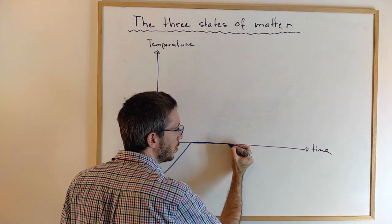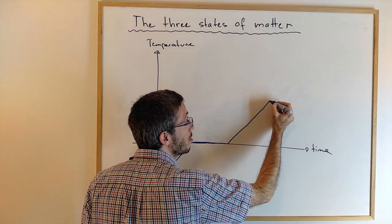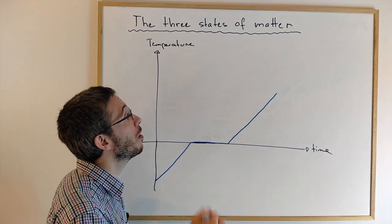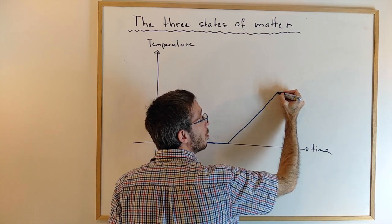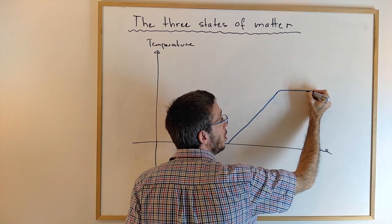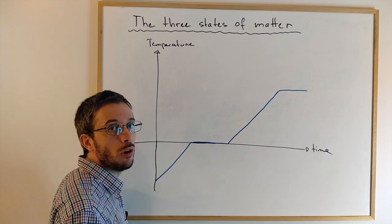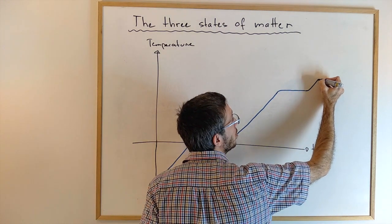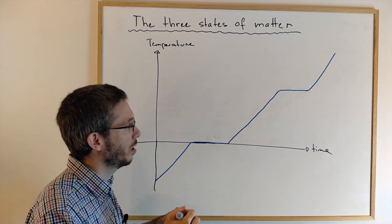Until some of the water starts evaporating. At this point, the energy that I add is used to evaporate the water, and my temperature of the entire water stays the same. If you're boiling water, the temperature of the boiling water will never exceed the boiling point until all the water is completely evaporated, and then the energy you're adding is going to be used to increase the temperature of the gas, or the vapor in the case of water.